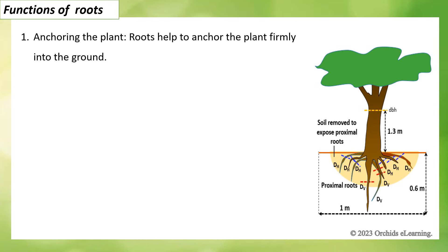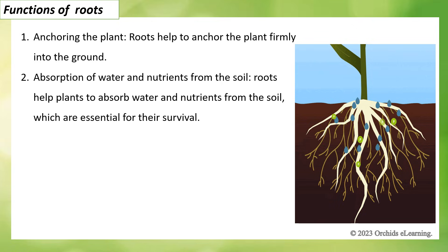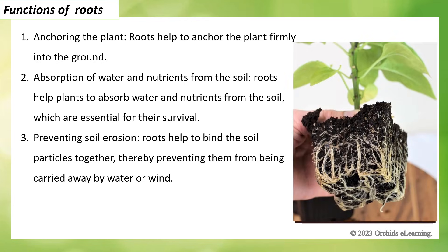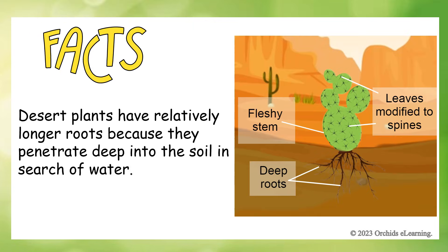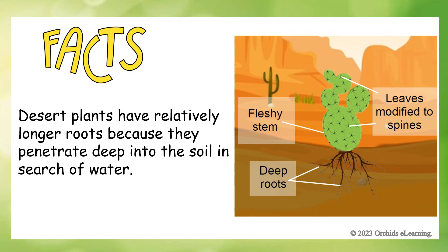Functions of roots: anchoring the plant — roots help to anchor the plant firmly into the ground. Absorption of water and nutrients from the soil — roots help plants to absorb water and nutrients from the soil, which are essential for their survival. Preventing soil erosion — roots help to bind soil particles together, preventing them from being carried away by water or wind. Sometimes roots are modified to perform various other functions such as reproduction and nutrition. Fact file: desert plants have relatively longer roots because they penetrate deep into the soil in search of water.